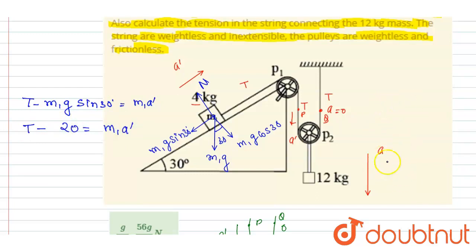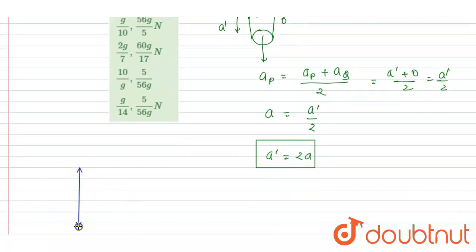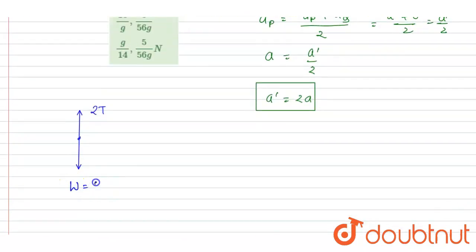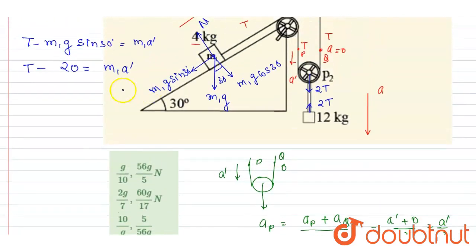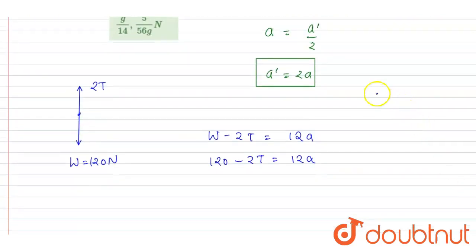Now write the force equation on the 12 kg block. Since the pulley is massless, the net force on the pulley should be zero, so the tension on that string will be 2T. On the 12 kg block, 2T acts in the upward direction and the weight is 120 newtons. So: 120 minus 2T equals 12a. The earlier equation was T minus 20 equals 4 a dash, which with a dash = 2a becomes T minus 20 equals 8a.